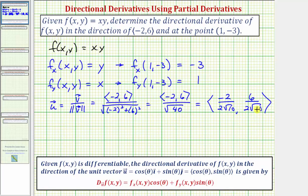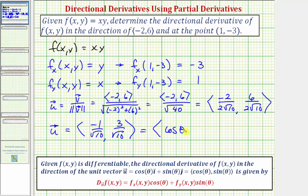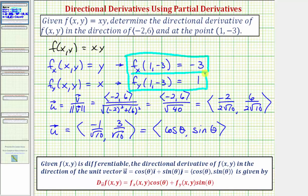Because this is a unit vector, the x and y components give us the values of cosine theta and sine theta. So the unit vector in the direction of the given vector has an x-component of negative 1 over √10 and a y-component of 3 over √10 — which equals (cosθ, sinθ). So we know: the partial with respect to x at the given point equals negative 3, the partial with respect to y equals positive 1, cosine theta equals negative 1 over √10, and sine theta equals 3 over √10.